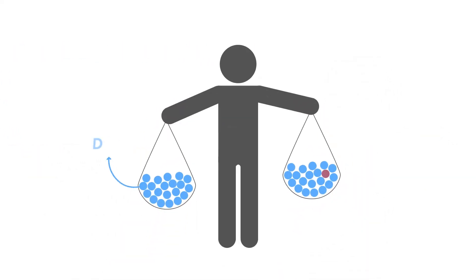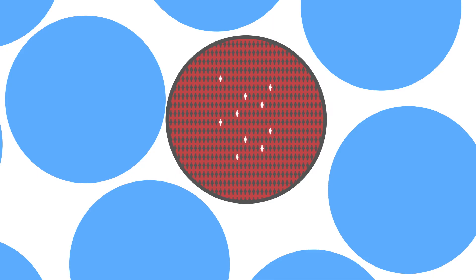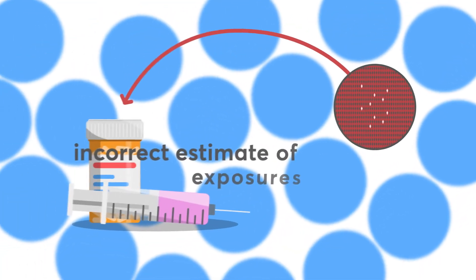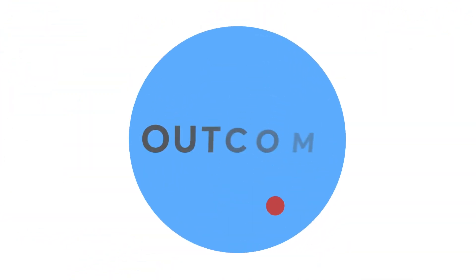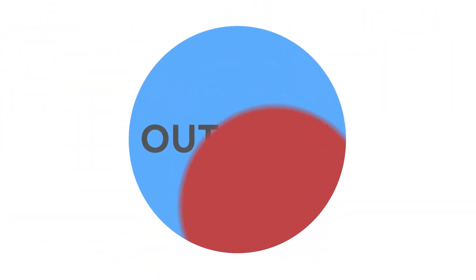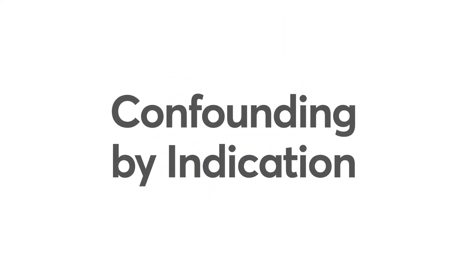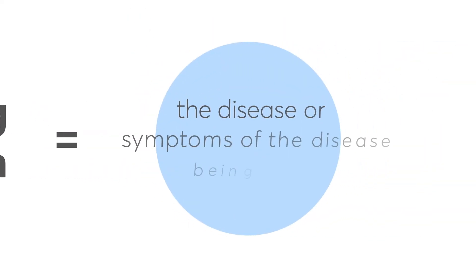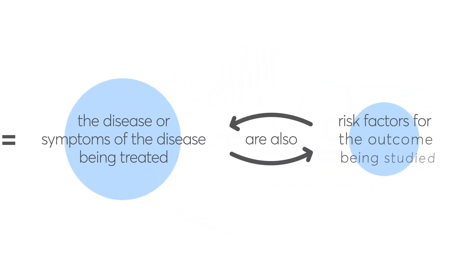As with all scientific approaches, there are sources of error or bias that need to be considered. Bias is any systematic error in the selection of subjects or the collection of information on subjects that results in an incorrect estimate of the exposure's — in this case, medicines' — effect on the outcome. A special type of bias that affects pharmacoepidemiology studies is confounding by indication, which means the disease or symptoms of the disease being treated are also risk factors for the outcome being studied.